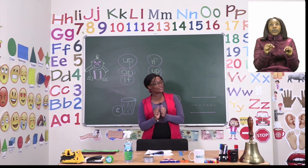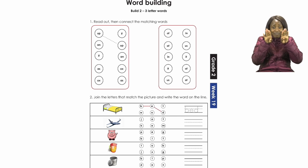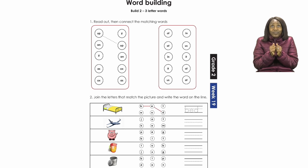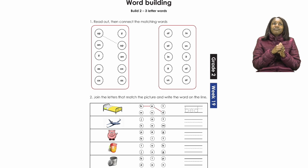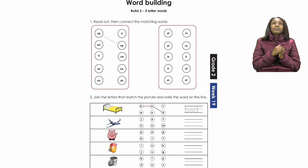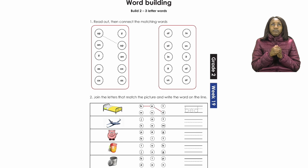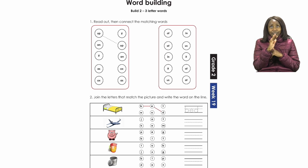For our lesson now, boys and girls, let's all turn to page 11. On page 11, we are going to be doing word building. It's going to be our job to create two and three letter words. For number one, we're going to read out and then connect the word that matches to the other words. When reading two letter words, if you don't know how to say them, that's okay — sound them first and then say them. Remember, letters make sounds and sounds turn into words. Take your time if it is difficult. When you're done reading, match the words that are the same.